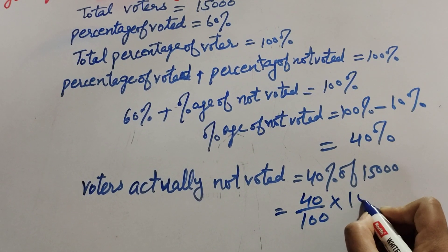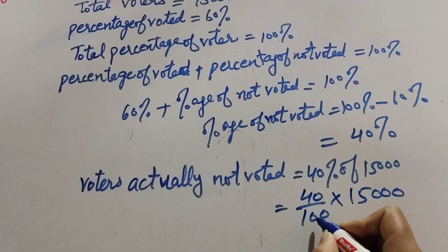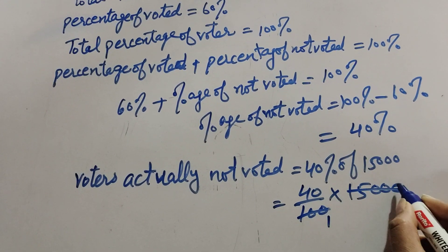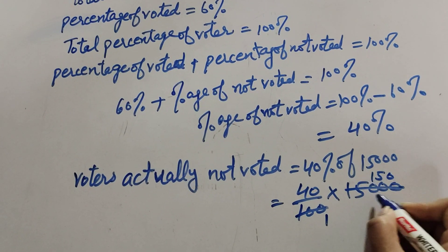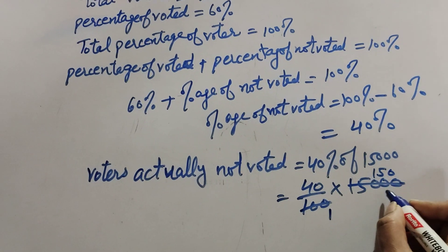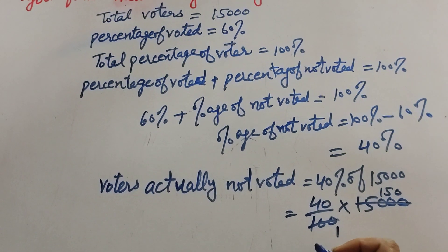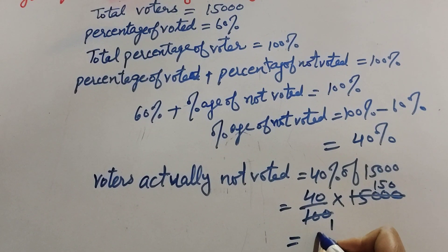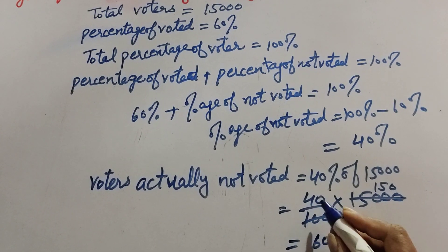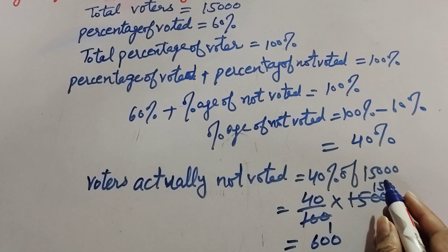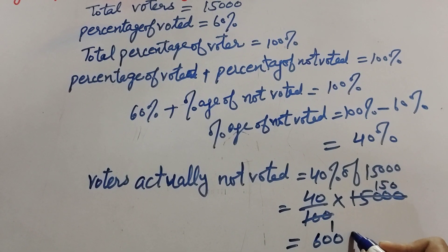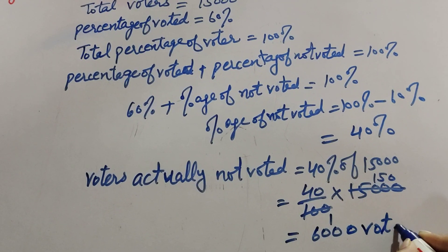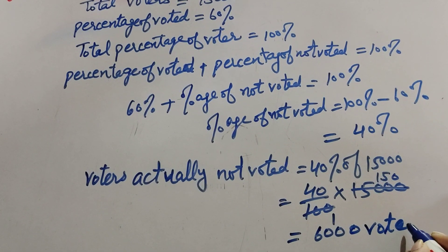40 over 100 multiplied by 15,000 — it is equal to 6,000. There are a total of 6,000 voters who did not vote.